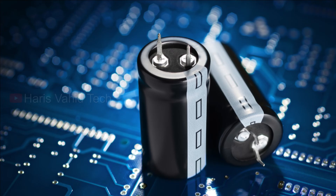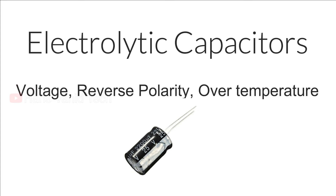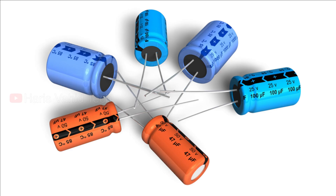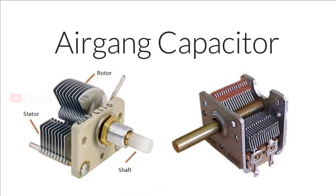Electrolytic capacitors are used in filters, time constant circuits, etc., and are widely used because of their low cost and small size. However, there are factors that can damage them quickly: first, excess voltage may cause leakage leading to short circuits; second, reverse polarity causes self-destruction of the oxide layer and failure; third, excess heat dries out the electrolyte and shortens the life. Compared to other capacitors, electrolytic types have a shorter lifespan.